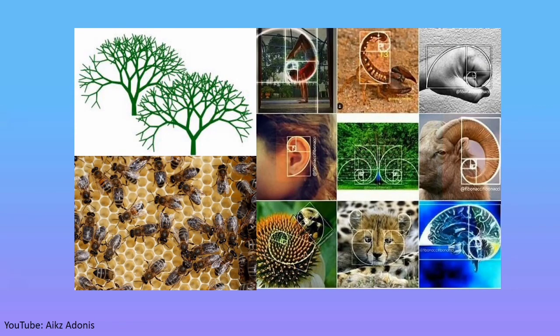In nature, aside from the branch patterns of trees, animal horns, spiral of snails, and seed beds, honeybee colonies maintain a ratio of males and females of 1 to 1.618. With all of these patterns, the Fibonacci sequence and golden ratio help us understand and solve the mystery of nature.